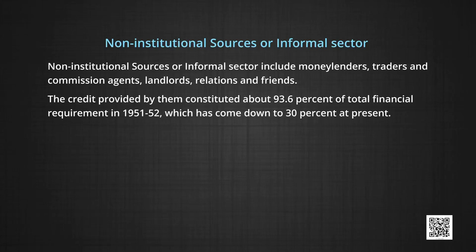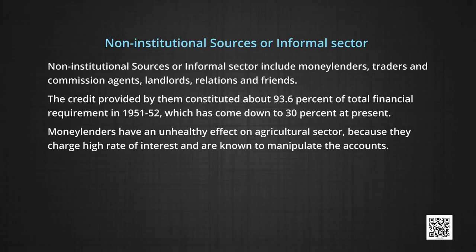The credit provided by informal sources constituted about 93.6 percent of total financial requirements in 1951–52. It has now come down to about 30 percent at present. Money lenders have an unhealthy effect on the agricultural sector because they charge high rates of interest and are known to manipulate accounts. In the event of non-payment of interest and loans, they acquire the lands of the farmers. They also tend to exploit labor by making them work without paying wages. With the development of banking and other financial institutions providing credit at competitive rates, money lenders are no longer an important source of credit in the rural economy.